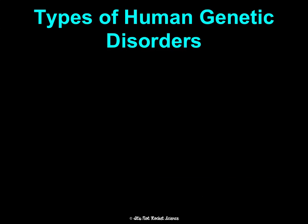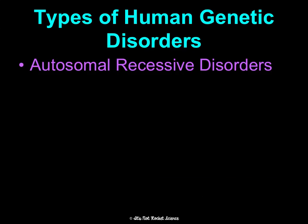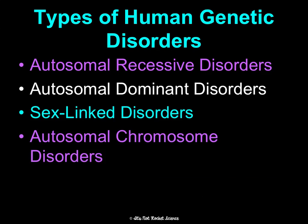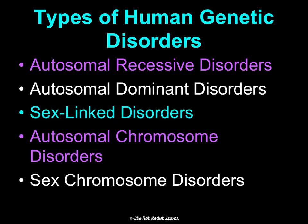That's a background on mutations. Now we're going to talk through the five basic categories of human genetic disorders, which you'll also research in a genetic disorder project. There are autosomal recessive disorders, autosomal dominant, sex-linked, autosomal chromosome disorders, and sex chromosome disorders. The first three involve gene mutations; the last two are chromosome mutations.